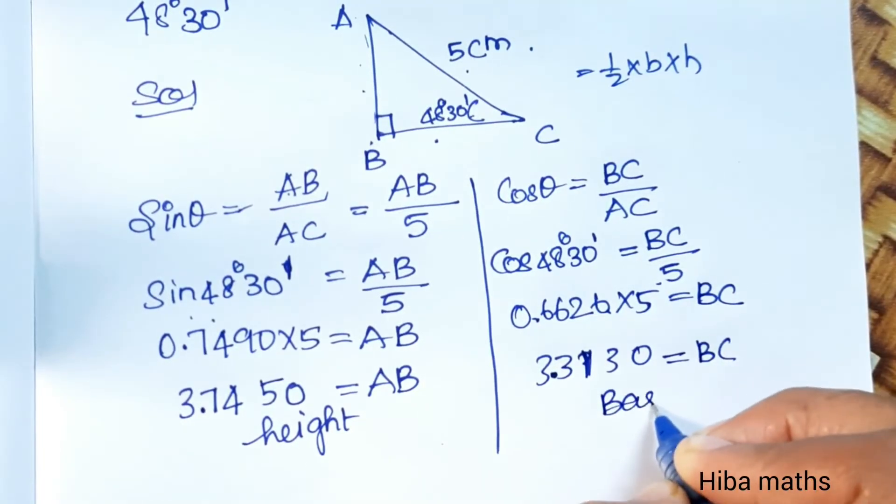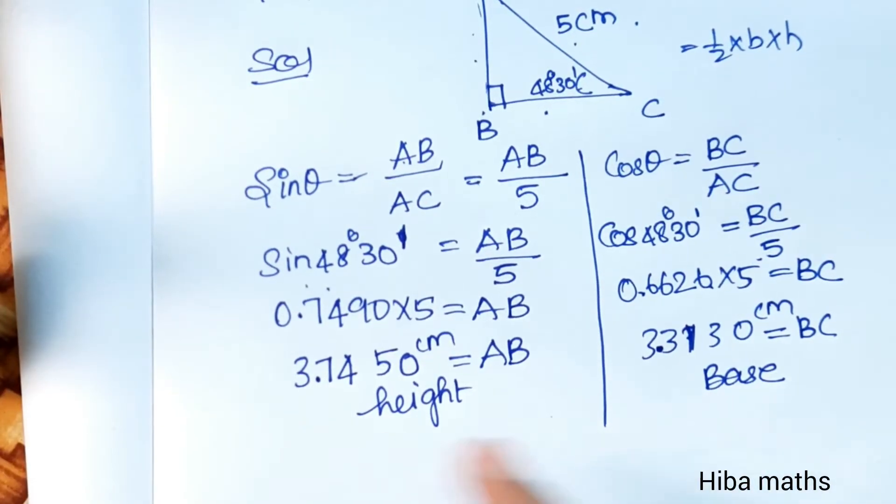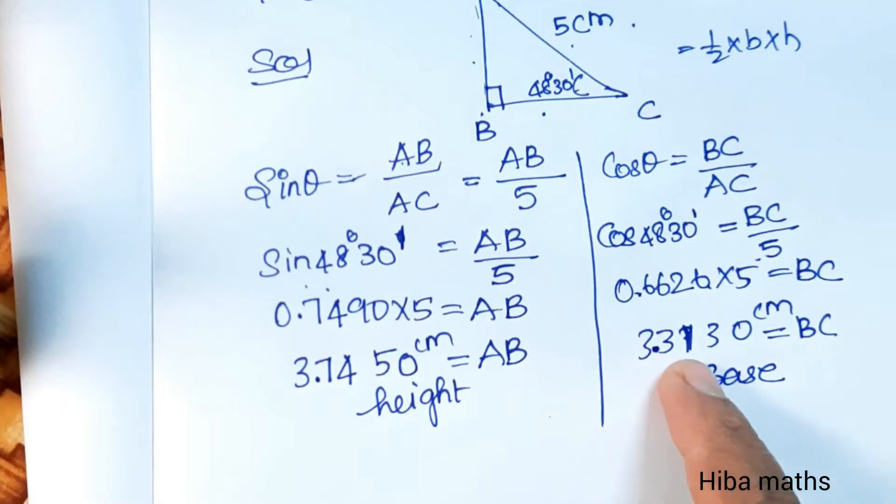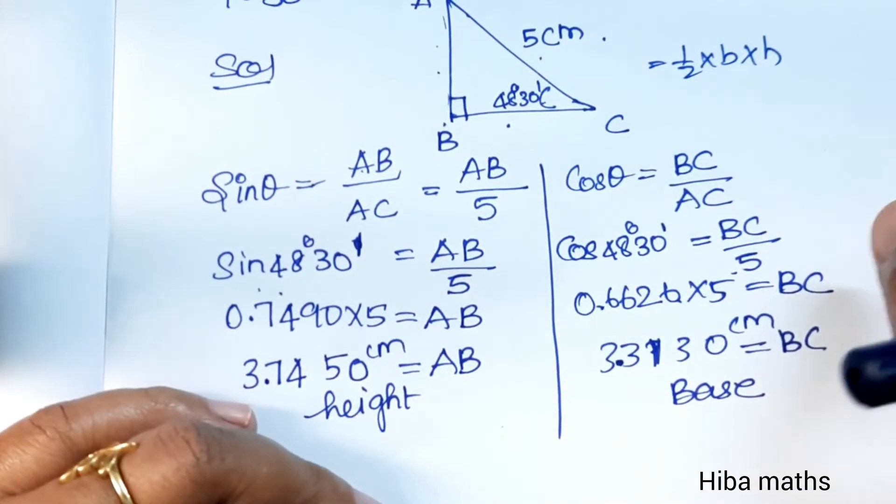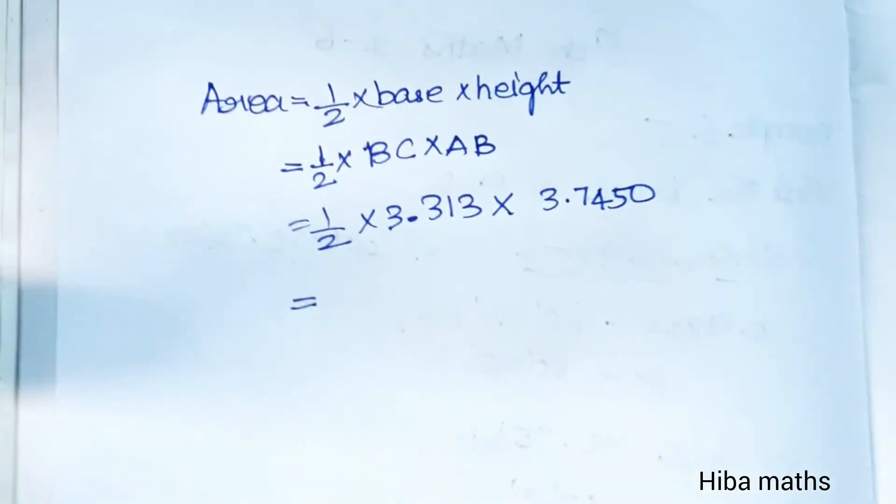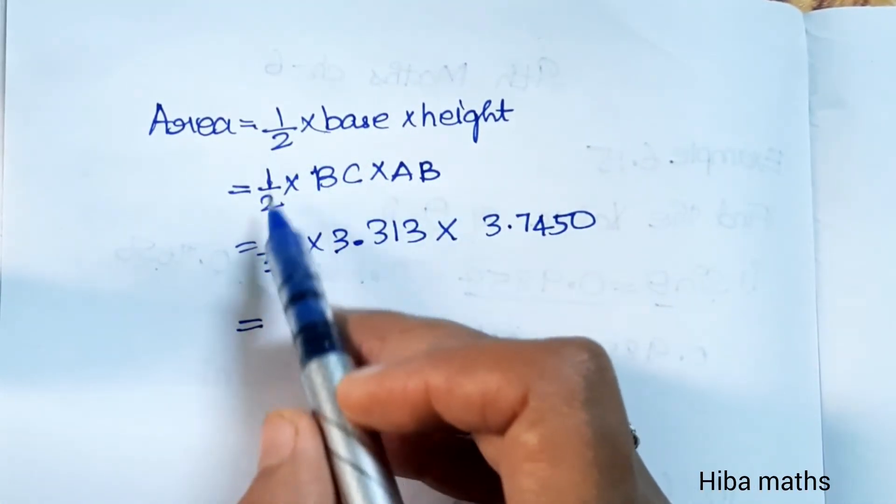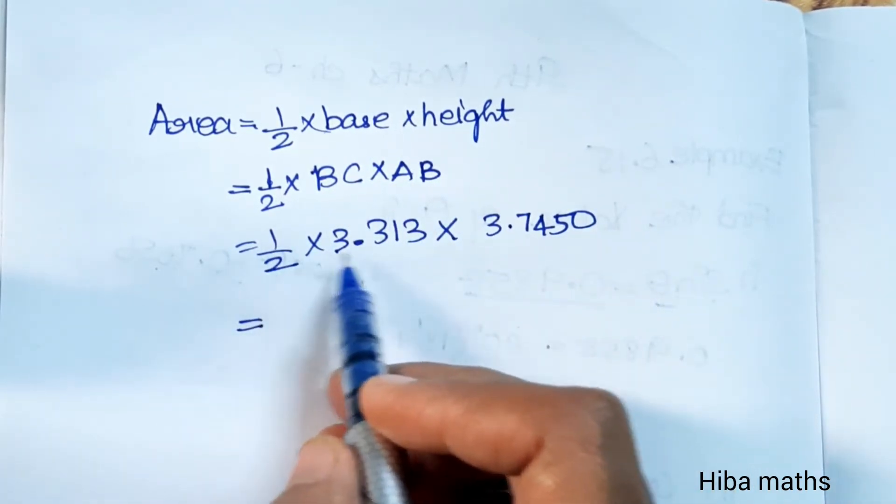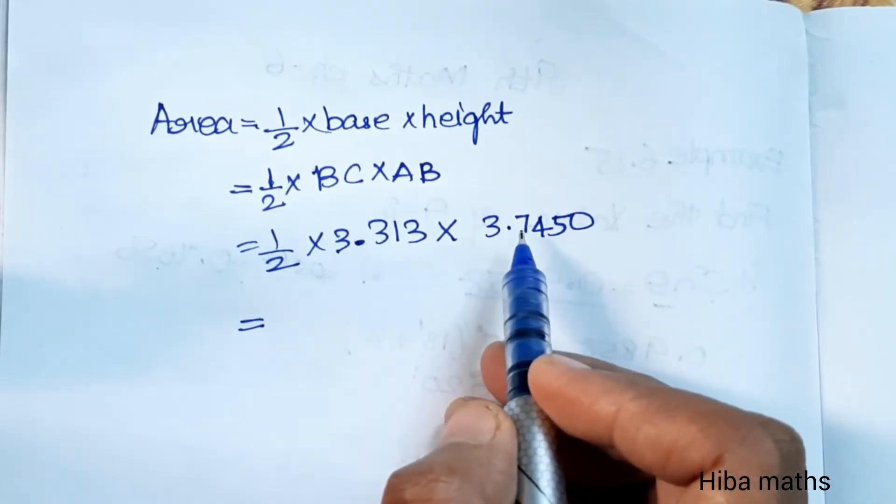BC is the base. Now we substitute the area formula. Height is 3.7450 cm, base is 3.3130 cm. Area of right angle triangle is half into base into height. Half into BC into AB.